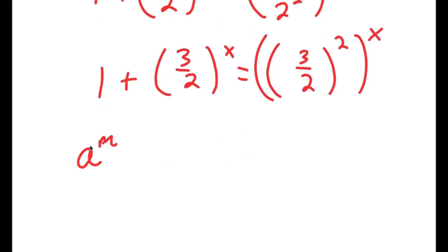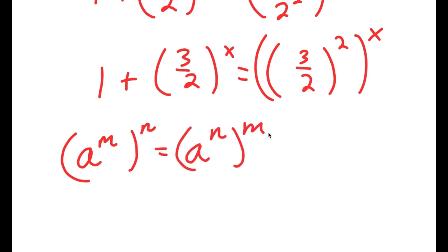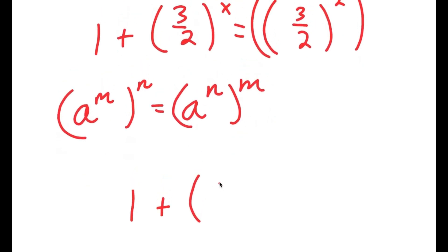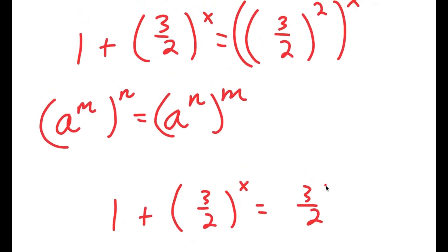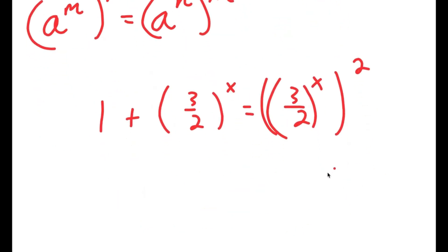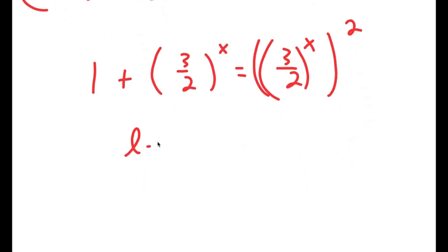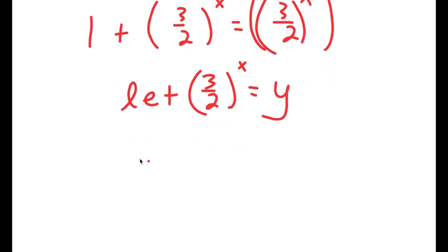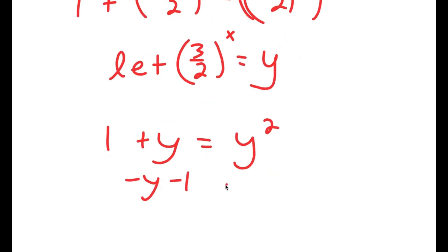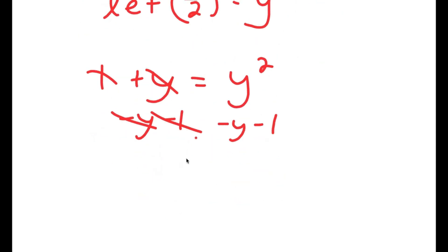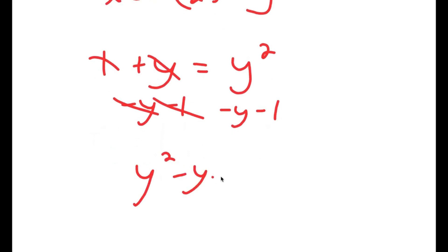Using the property that a to the power of m over a to the power of n equals a to the power of n to the power of m, this equals 1 plus 3 over 2 to the power of x, which equals 3 over 2 to the power of x to the power of 2. Now I'm going to let 3 over 2 to the power of x equal the variable y, so I get 1 plus y equals y squared. Subtracting y and 1 from both sides gives y squared minus y minus 1 equals 0.